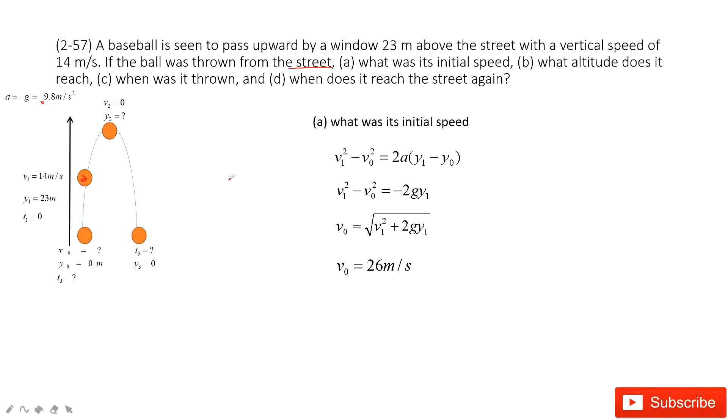Now, let's look at the second problem. What altitude does it reach? For this, we get this 26 meters per second. And then we want to find the y2, right? Because this baseball moves to the window and then reaches to the peak. And then it will fall down to the reference point. It looks like that. Now we want to know y2.